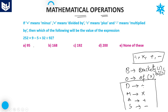In this session, we have several models of problems in mathematical operations. We will discuss one model. Here, plus means minus, into means divided by, divided by means plus, and minus means multiplied. Which of the following will be the value of the expression? The expression is given as: 252 into 9 minus 5 plus 32 plus divided by 92. You should not calculate based on the given expression — first, you have to interchange the signs.